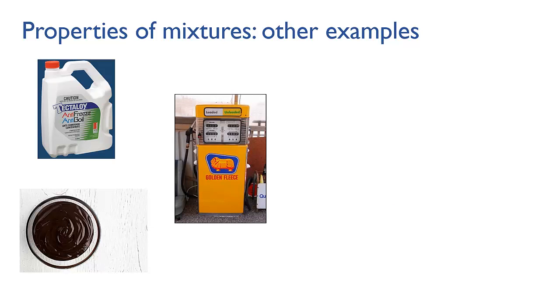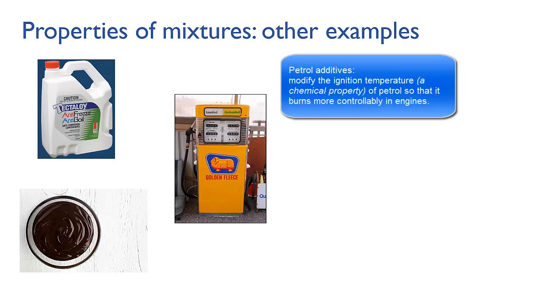We used to add lead in the form of a compound called tetraethyl lead to petrol to change its combustion properties. This is an example of using a mixture to fine-tune chemical rather than physical properties. The additive raises the temperature at which the petrol ignites, preventing the engine from misfiring or running roughly. When leaded petrol was banned, chemists found other, less toxic chemicals that could be mixed with petrol in order to change the properties in a similar way.